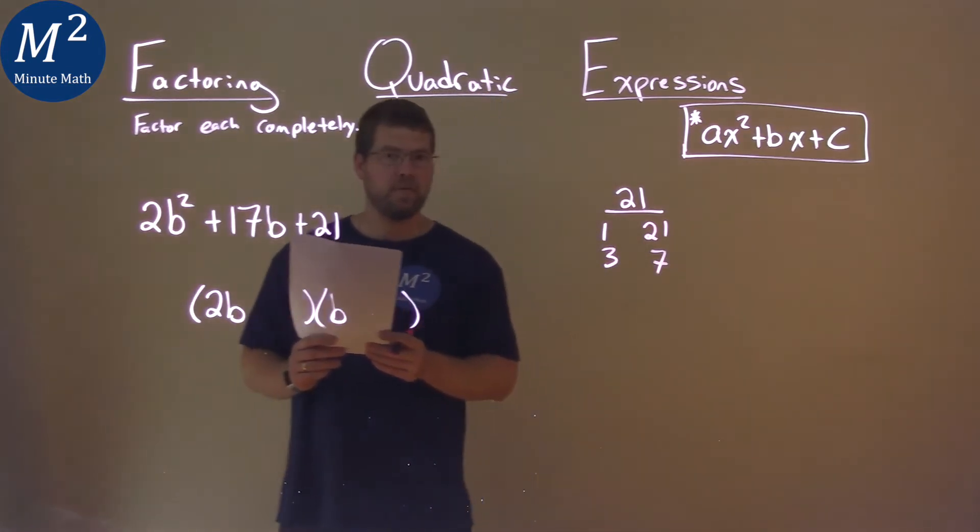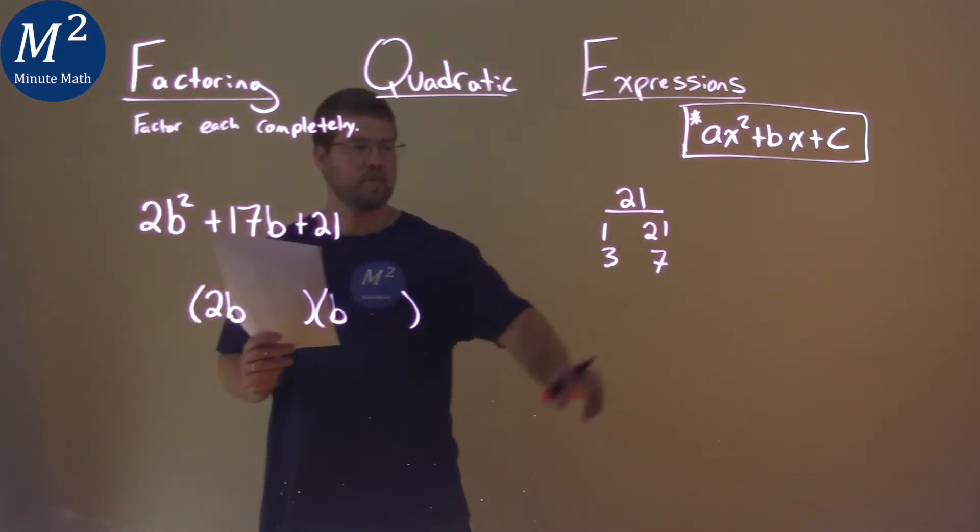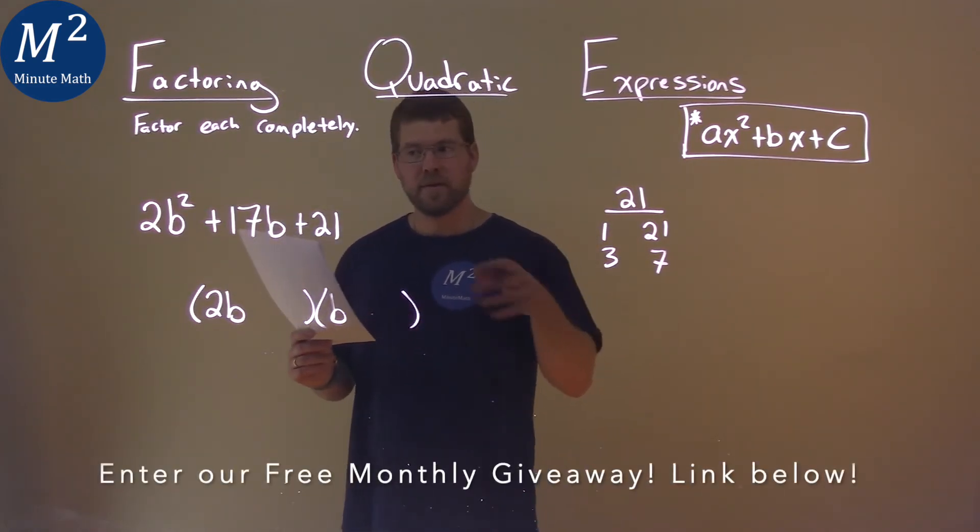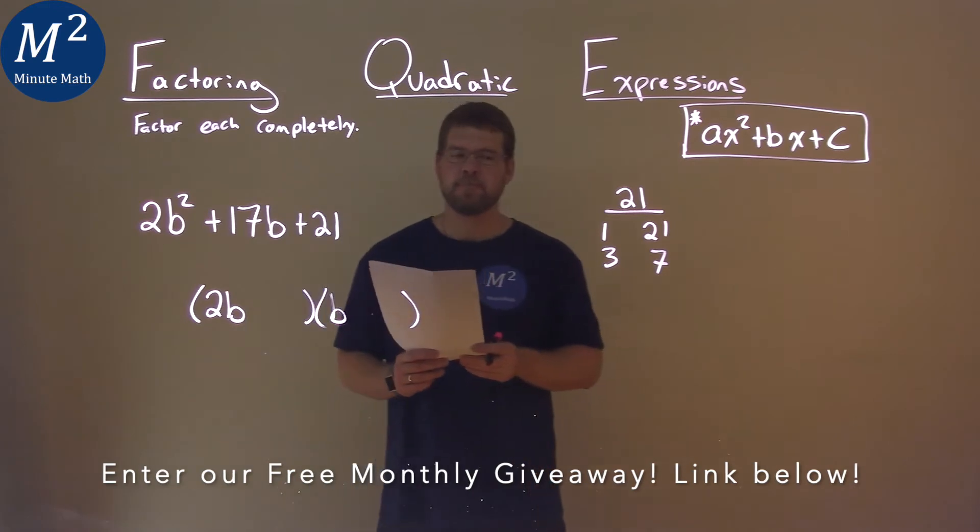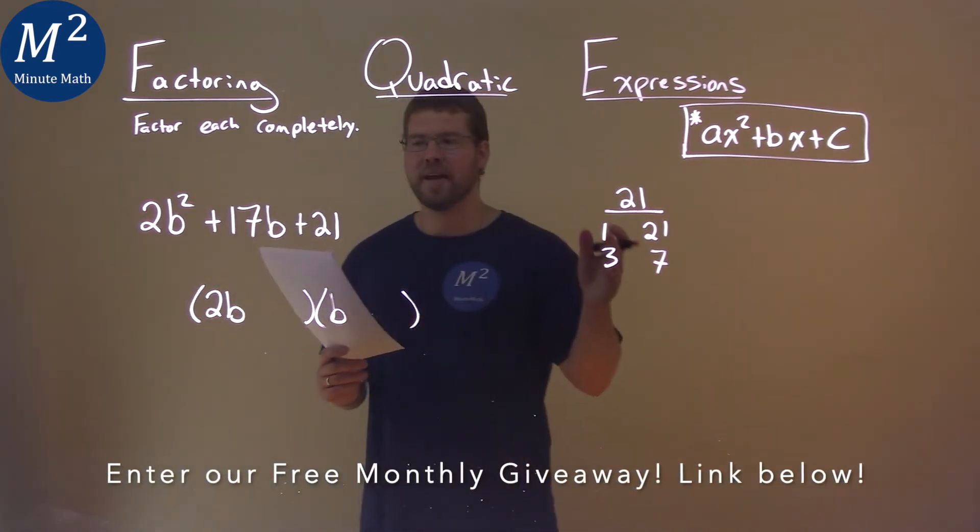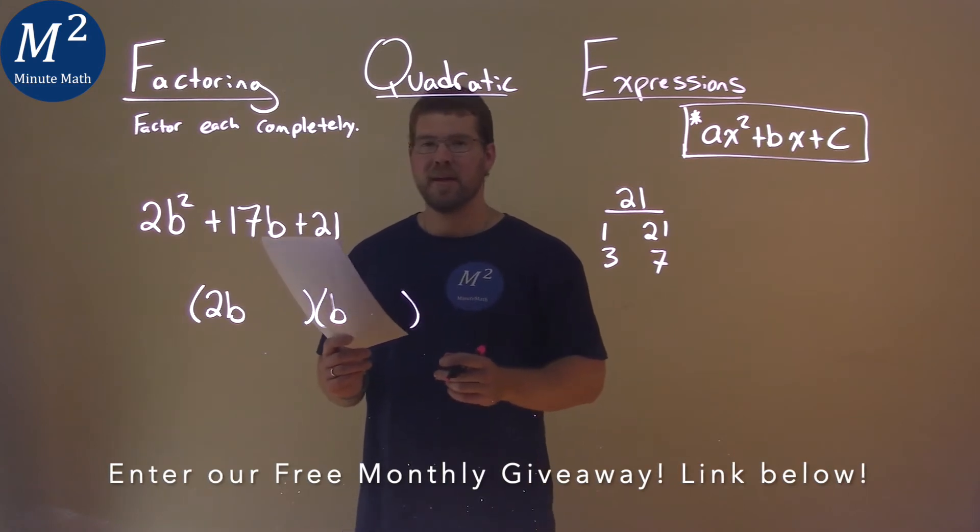So now I have to ask myself this: 2 times which one of these numbers plus the other pair gives us 17? And when I first test some of these out, I'm looking at 2 times which one gets me really close to 17, and that's going to be the 7.